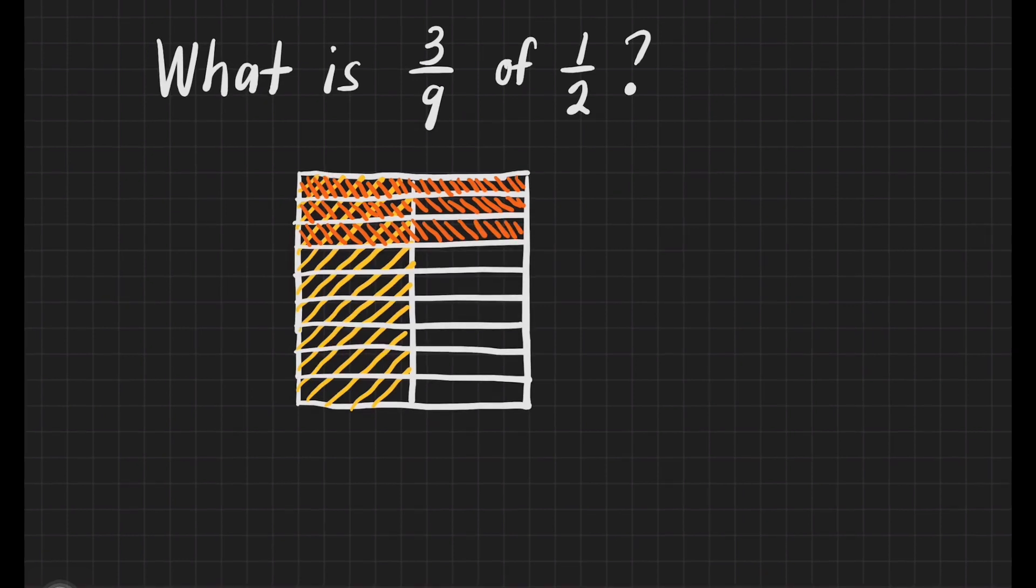Now, the answer for this question is the parts that are being shaded twice. This is what I'm encircling right now. We'll write 3. Out of how many parts is this whole divided? It is divided into 18. We'll write 18.